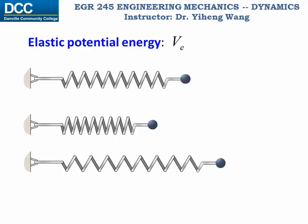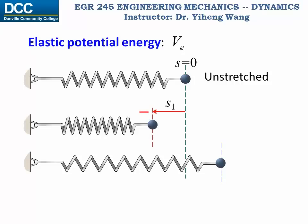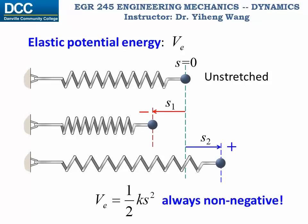The elastic potential energy is defined to describe the ability of a spring force to do work to an object attached to the spring. Unlike the gravitational potential energy, the datum for the elastic potential energy is not randomly chosen — it is always chosen to be the position when the spring is unstretched. Therefore when the spring is compressed, the displacement is negative; when stretched, the displacement is positive. However, the potential energy associated with the spring force is always calculated as one-half k s squared, where k is the spring constant and s is the displacement. Therefore it is always non-negative, because the spring will always try to restore its original shape and length and do work to return the particle to its unstretched location.